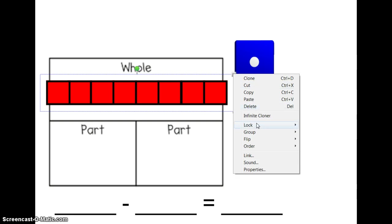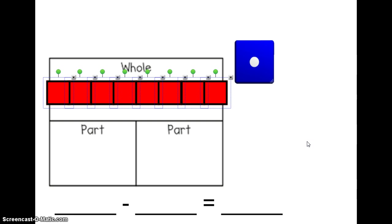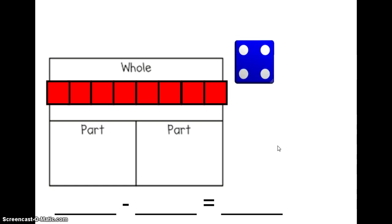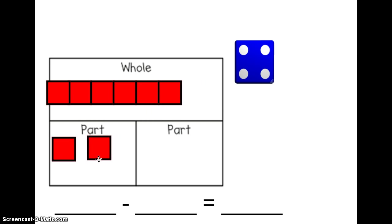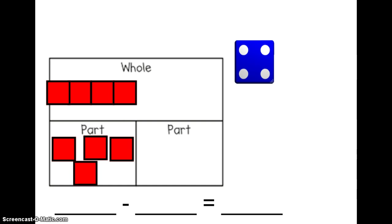Let's decide how many cubes I want to take away from my whole. I'm going to roll a dice to decide how many cubes I want to drag into one of my parts. Let's move four cubes from my whole into one of my parts: one, two, three, four. So far on my part-part-whole mat I've done eight cubes as my whole, minus four cubes into one of my parts, equals blank.